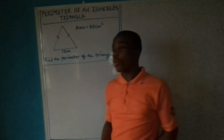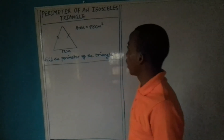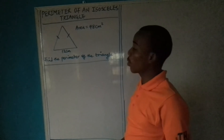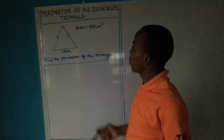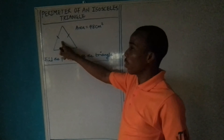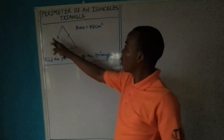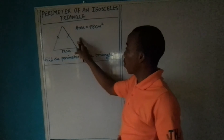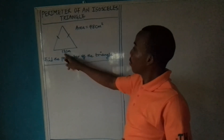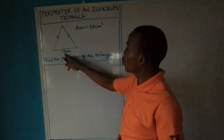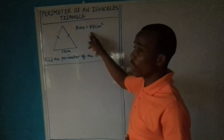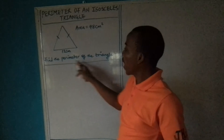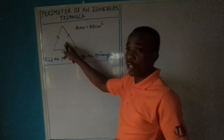In this lesson, we are going to focus on the perimeter of an isosceles triangle. Based on the question posted earlier, we can see that this is an isosceles triangle because the two sides are equal. You can see the sign showing that the two sides are equal. The base of this triangle is 12 cm and the area is 48 cm squared. The question says you should find the perimeter of the isosceles triangle.